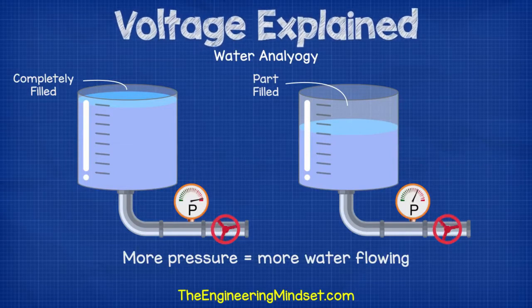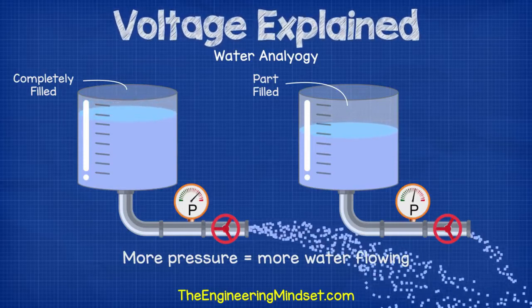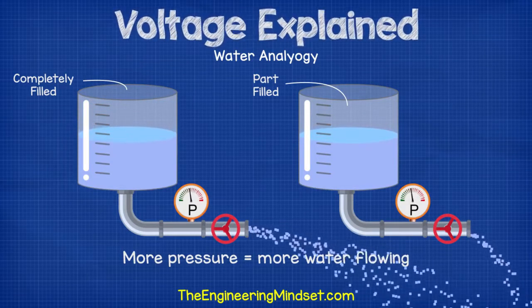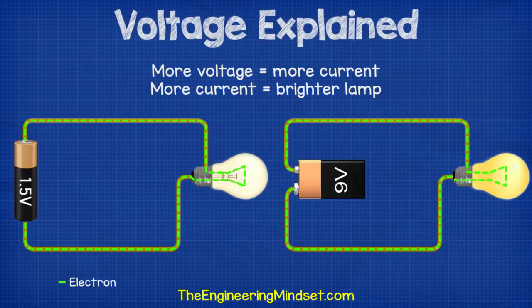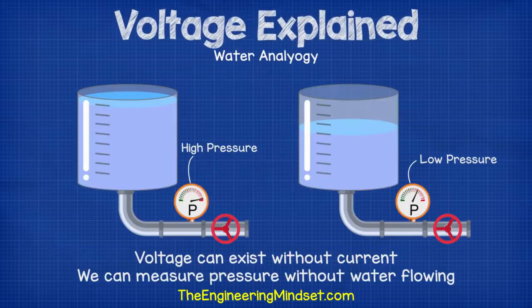If we have a water tank that is only partly filled, then there will be less pressure in the pipe. If we open the valve, we let the water flow. The same happens with electricity. The more voltage we have, the more current can flow.